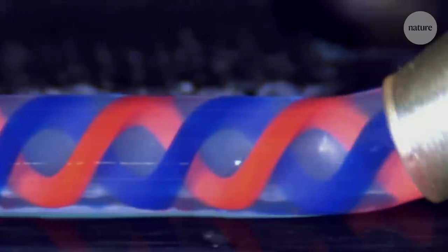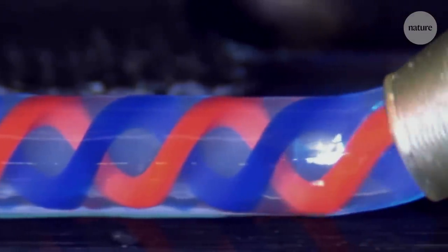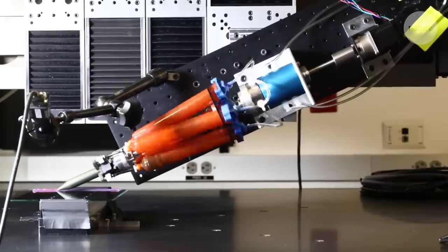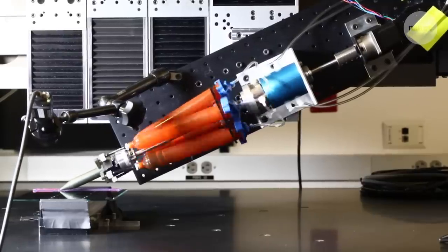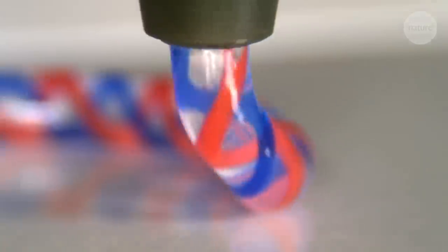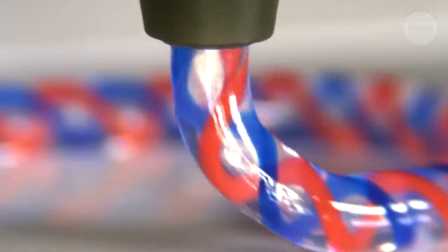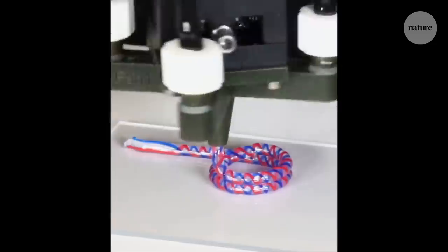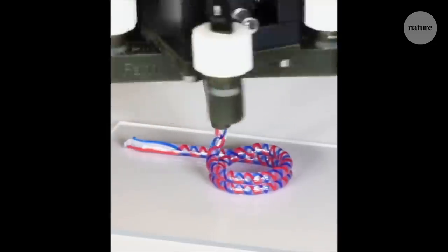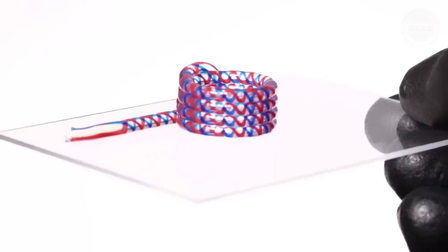This 3D printer creates twisting helix shapes as it prints thanks to a newly designed rotating multi-material nozzle. This new technology can create complex patterns inside the layers it prints and allows researchers to finely control the properties of different parts of the printed structure.